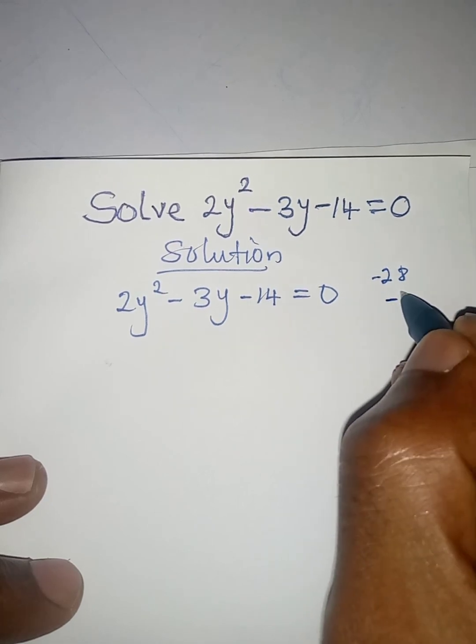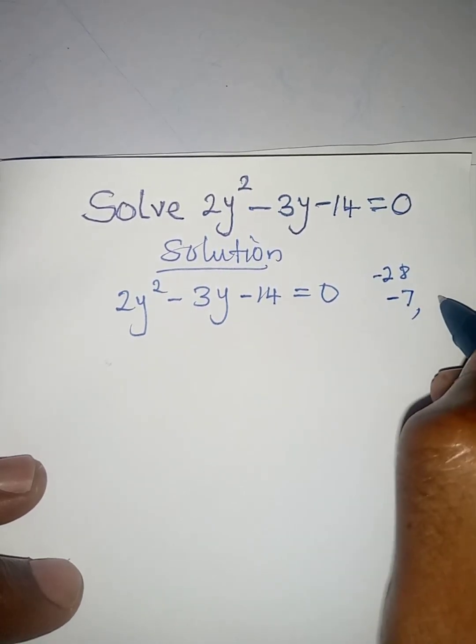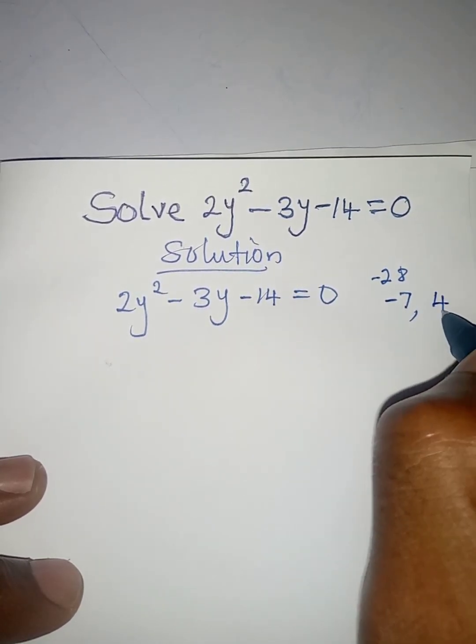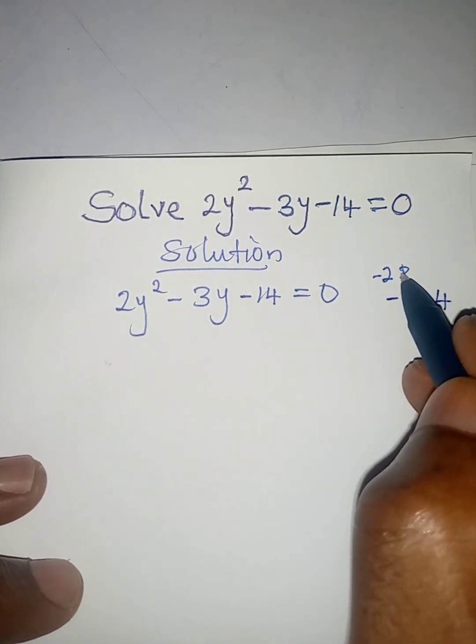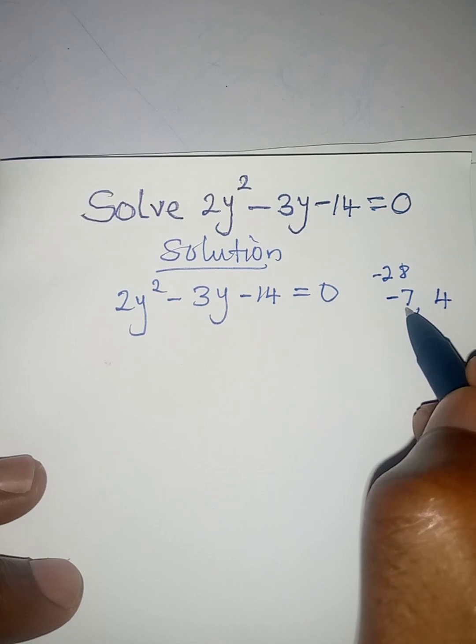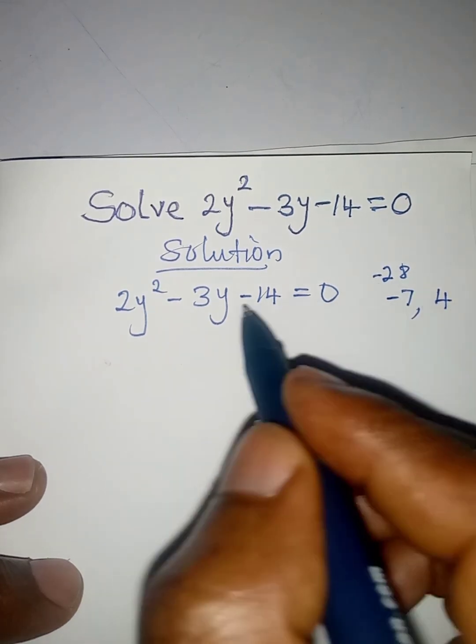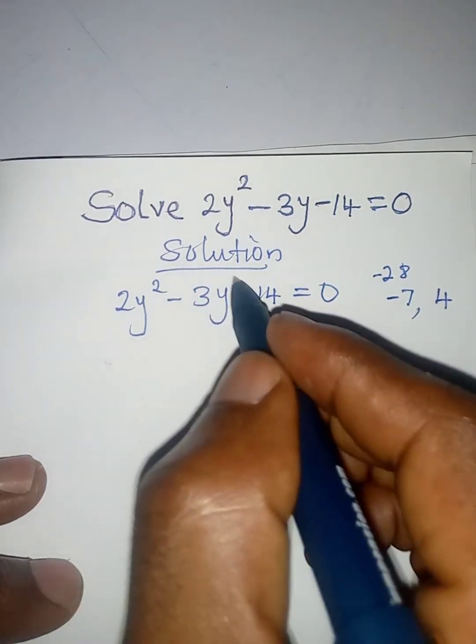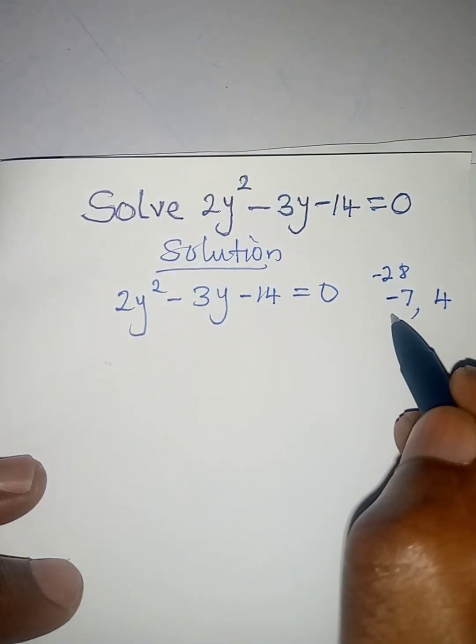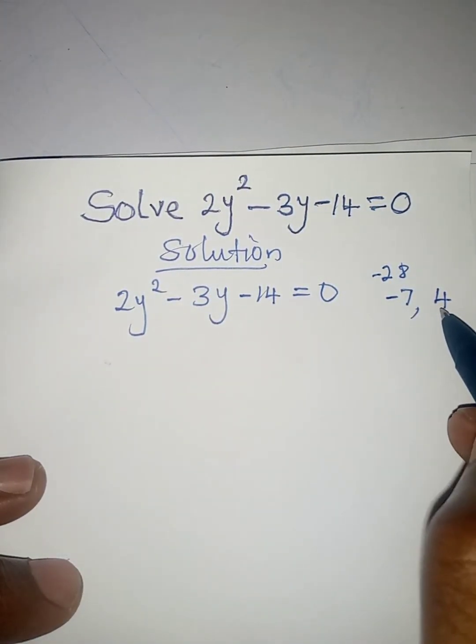The two numbers will be minus 7 and 4, because minus 7 times 4 will give us minus 28, and then minus 7 plus 4 will give us this minus 3. So now in place of minus 3y, we are going to have minus 7y plus 4y.